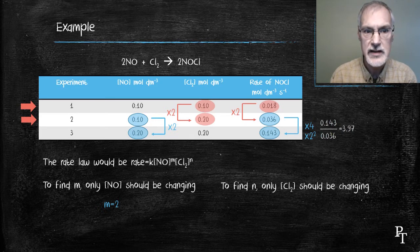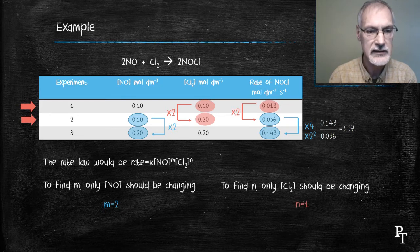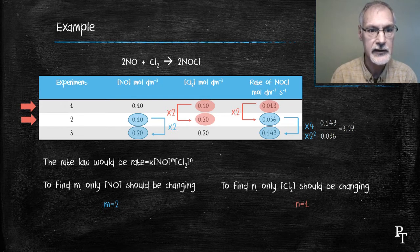So doubling chlorine doubles the rate. That's a proportional response, indicating that the exponent for the chlorine is 1.